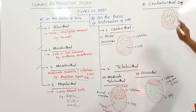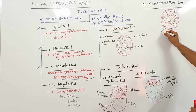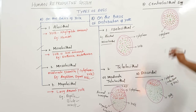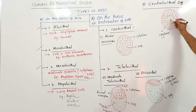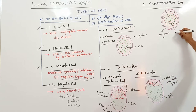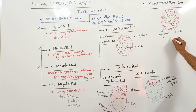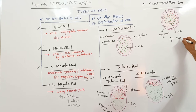Next, in Centrolecithal eggs, there is peripheral cytoplasm. In the peripheral cytoplasm, yolk is concentrated in the center. This is called Centrolecithal. Centrolecithal types of eggs are found in insects.